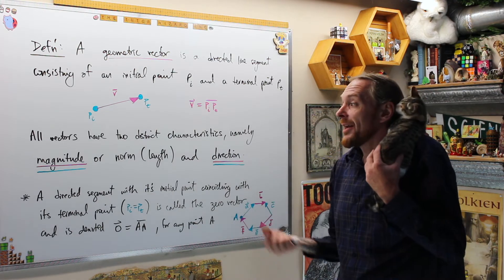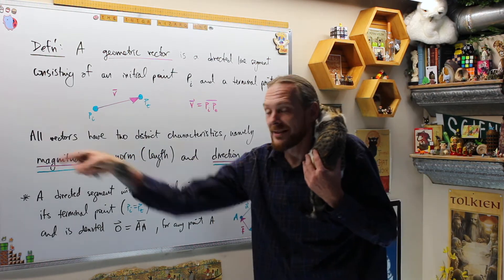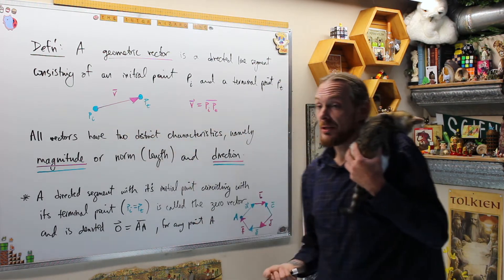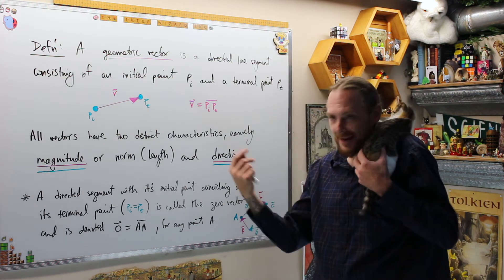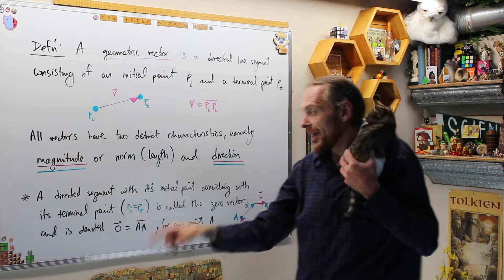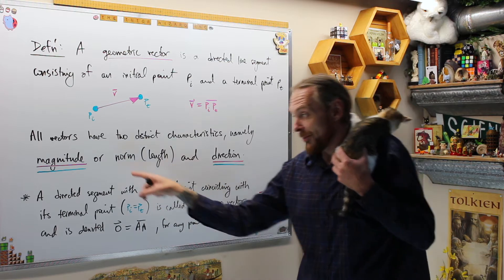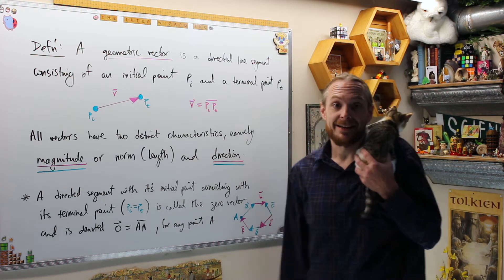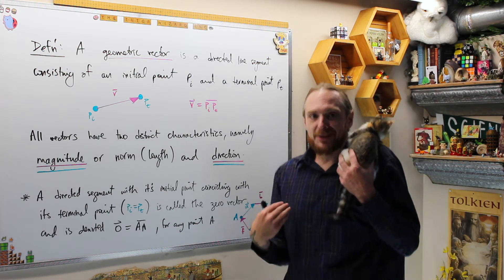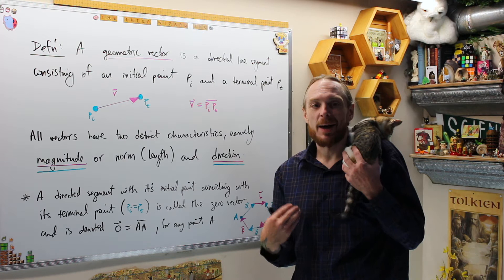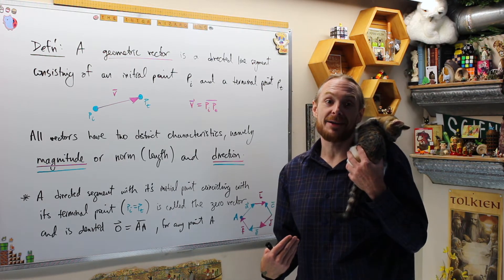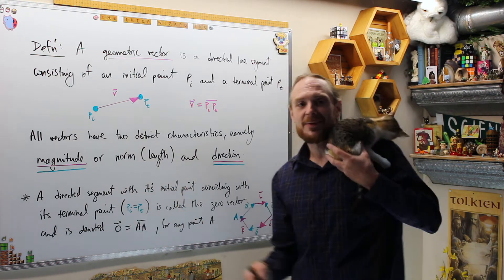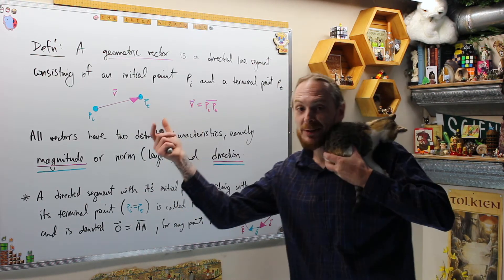Once we have that, it creates two distinct characteristics of a vector: namely the magnitude, or the norm, or the length. Physicists like to use magnitude, regular people use length, and in this course we're going to use the word norm. The magnitude of the vector is not the vector — the vector is the object, and the magnitude is a property of the object.